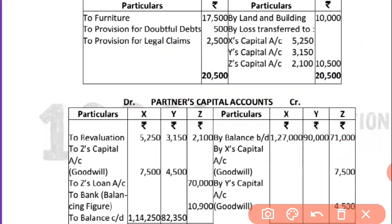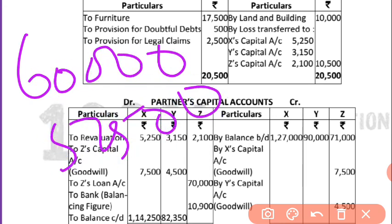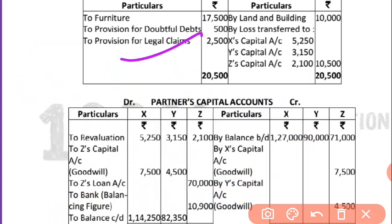The next adjustment is the legal claim — liability is increasing. The provision for claims is to be made at 60,000. Earlier in the balance sheet it was 57,500, so it has increased by 2,500. That is why I have transferred 2,500 to the debit side of the revaluation account.